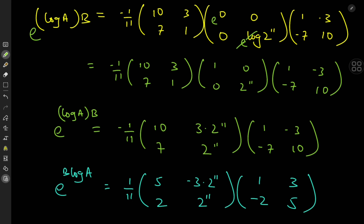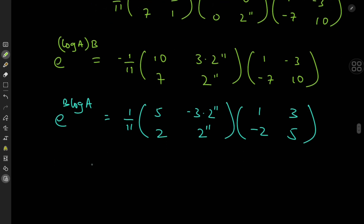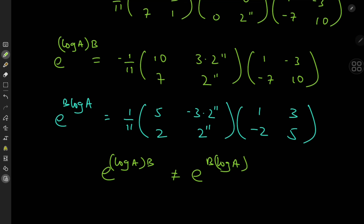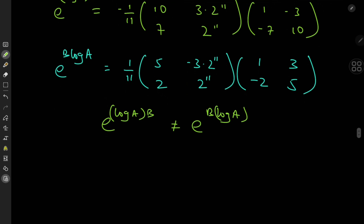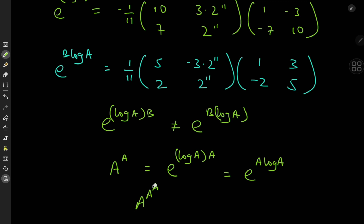Expanding confirms that these two results are not equal to each other — we have two clearly different matrices. So in general, e^(log(A)·B) ≠ e^(B·log(A)) because matrix multiplication isn't commutative. This means raising one matrix to another isn't well-defined in general. However, A^A — a matrix raised to itself — is well-defined since log(A)·A = A·log(A) by symmetry.